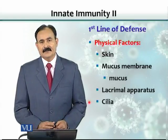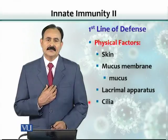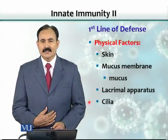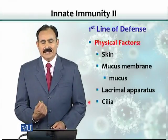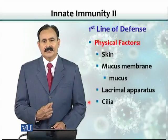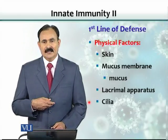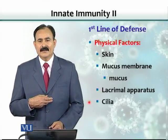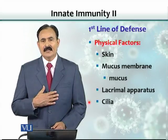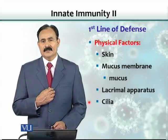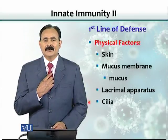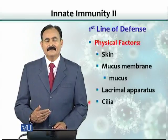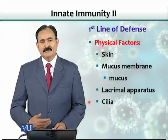Cilia is another example, found in the respiratory system. The epithelial cells have cilia — hair-like projections that beat unidirectionally. The mucus and the organisms trapped in the mucus are propelled from the lower respiratory system to the upper respiratory system until they reach the larynx, and then we cough them out. This is a kind of physical barrier that physically removes organisms.